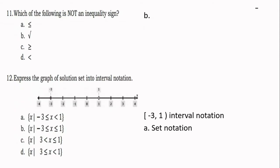Number 11: Which of the following is not an inequality sign? Obviously it's letter B, because that is a radical symbol. All of A, C, and D are inequality signs.